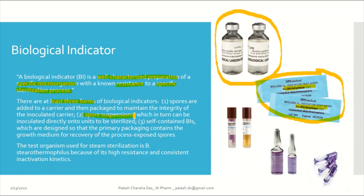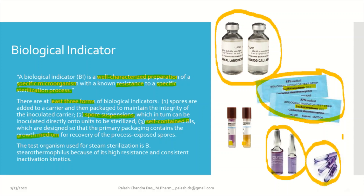The third category is the self-contained BI, which is designed so that the primary package contains the growth medium for recovery of the process-exposed spores. You can see the paper carrier. Once the sterilization cycle is done, you need to disrupt the glass ampoule inside by pressing from both sides, which releases the media, and then you incubate. These are ampoules and capsules. You can also directly inoculate them into your product and, after completion of the sterilization cycle, incubate the capsules and get results after the incubation period.